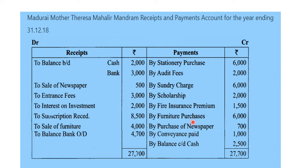Furniture purchase: $6,000. Purchase of newspaper: $700. Conveyance and traveling expenses: $1,000. Closing cash balance: $2,500.